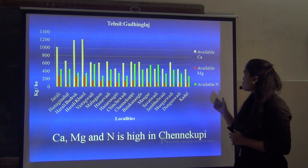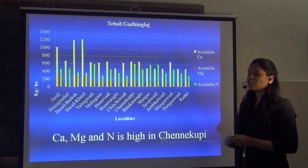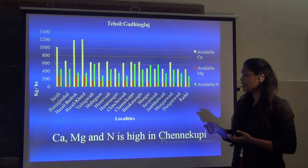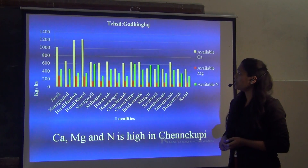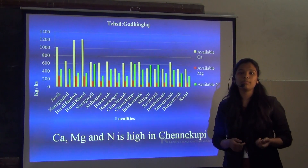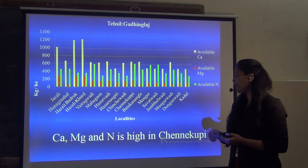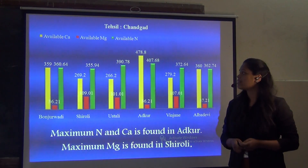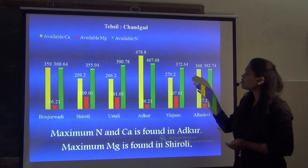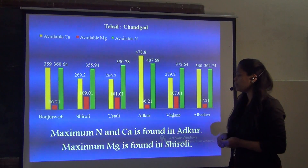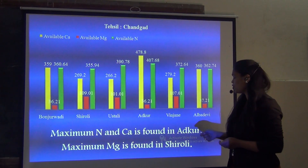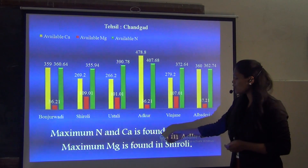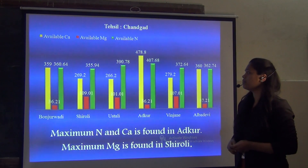We also analyzed for the Calcium, Magnesium and Nitrogen elements. From the Garinglas Tessit, Calcium, Magnesium and Nitrogen are high in the Chenyakubi region. From the Chandghar region, maximum Nitrogen and Calcium are found in Arkur while the maximum Magnesium is found in the Shiroli region.